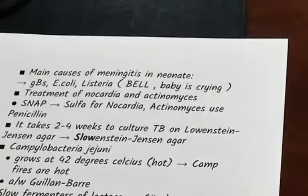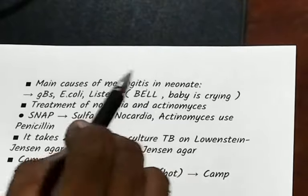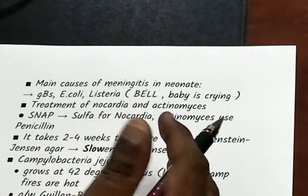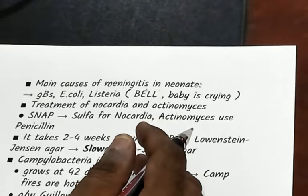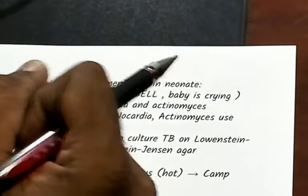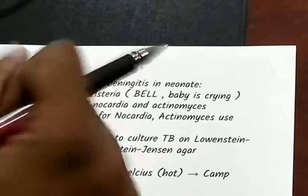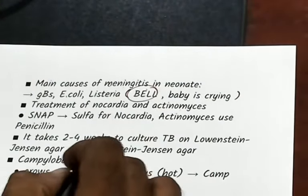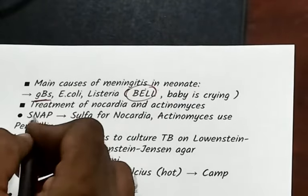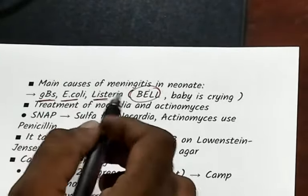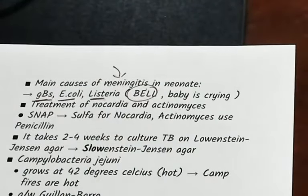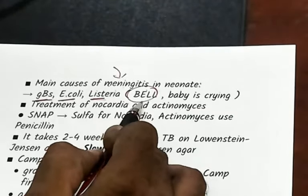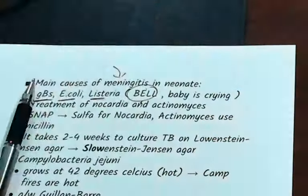What are the main causes of meningitis in neonates? The mnemonic is BEL: B — Group B streptococcus, E — E. coli, L — Listeria. These are responsible for neonatal meningitis.